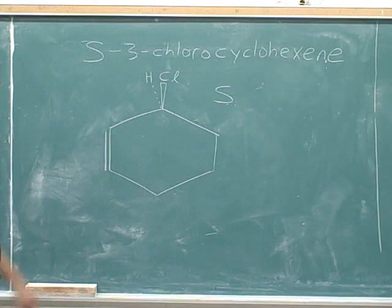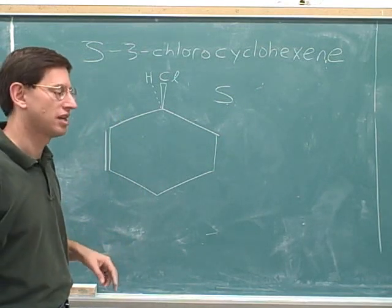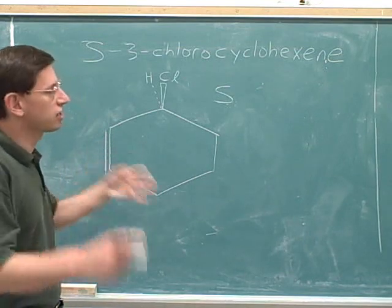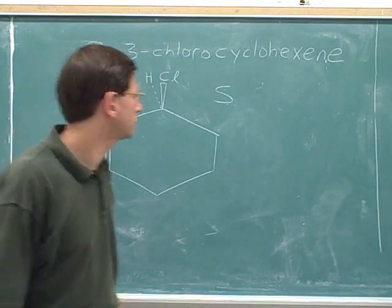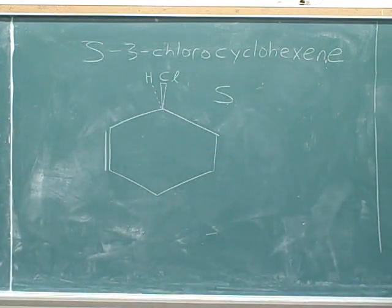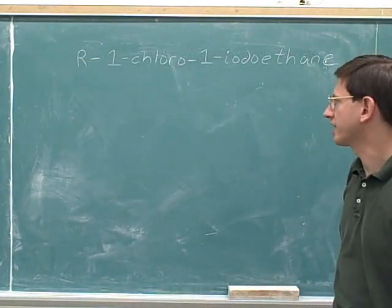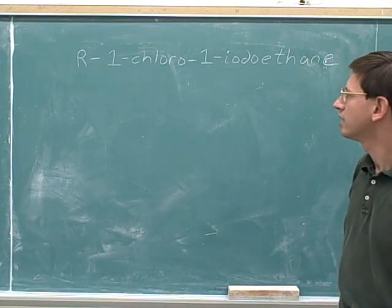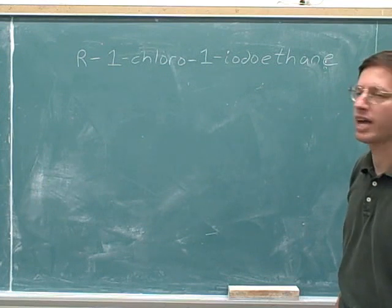So here's our drawing. Your picture might look different but still be correct. If your picture looks different, the way to test whether it's correct is to actually figure out whether you've drawn an R or an S stereocenter. Now the next molecule we're considering is R-1-chloro-1-iodoethane. Try drawing that molecule.